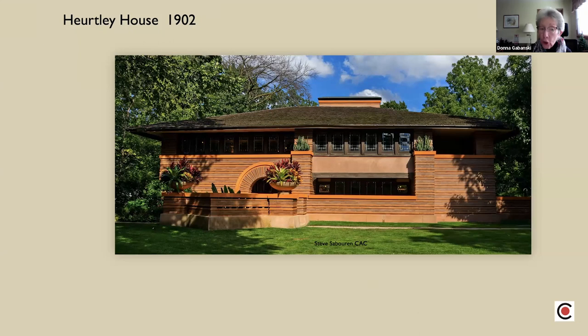The Hurtley House is one of the early prairie houses. It's 1902, in Oak Park again on Forest Avenue — just a place you want to take a walk down to see these Frank Lloyd Wright homes.